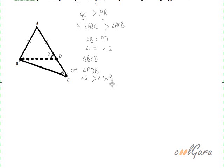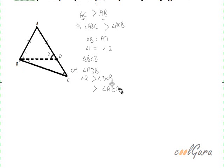That is, angle 2 is the sum of these two angles, so it has to be greater than angle DCB. So, angle 2 is greater than DCB. In place of DCB, we can write ACB, as these are the same angles — angle ACB.